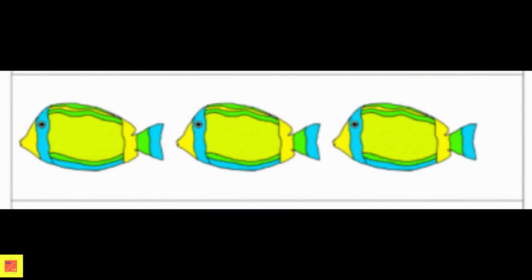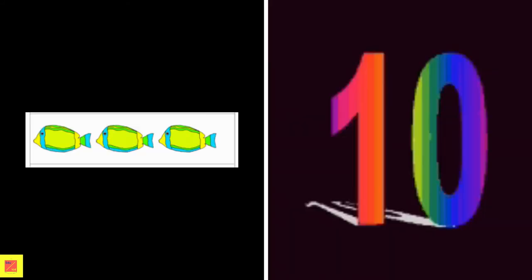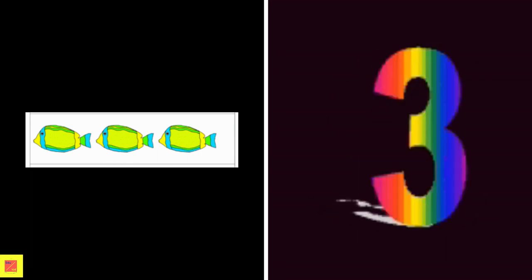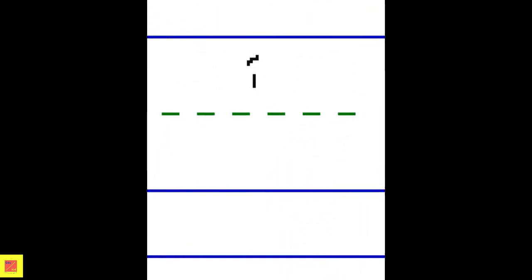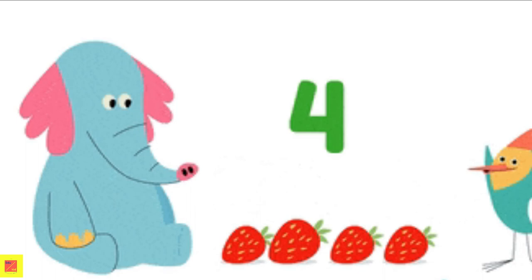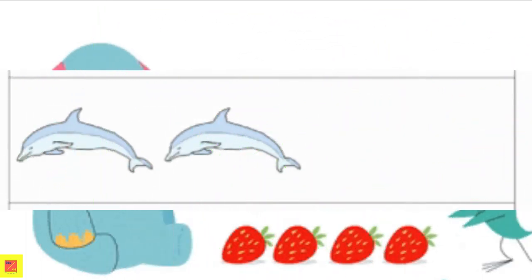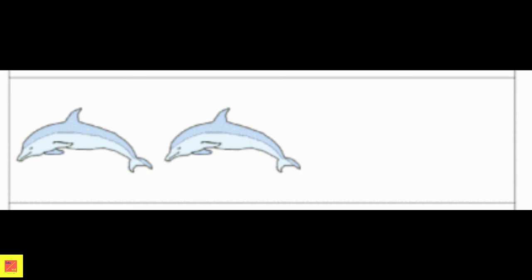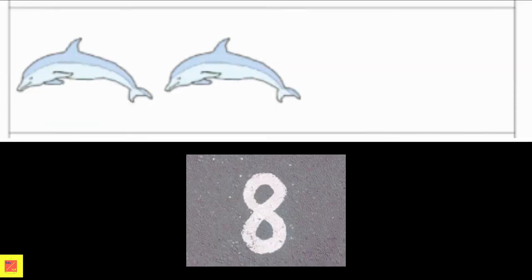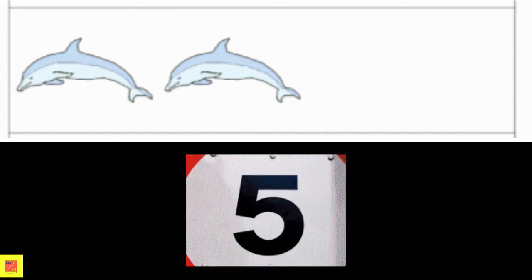How many fishes are there? There are 3 fishes. How many dolphins are there on your screen? There are 2 dolphins.